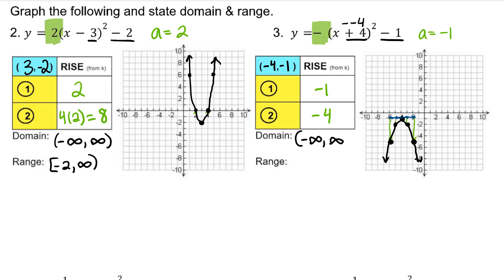Domain is negative infinity to infinity. Now that we have a downward-facing parabola, our range will begin with negative infinity and end with the maximum value, which is k — the y value of the vertex — negative 1.